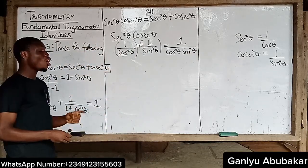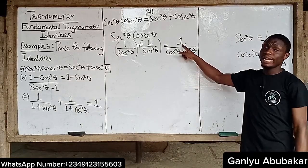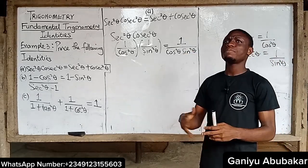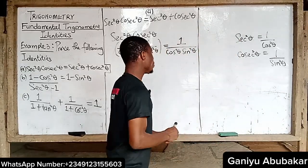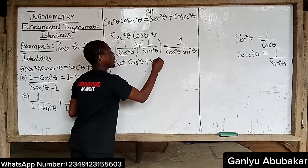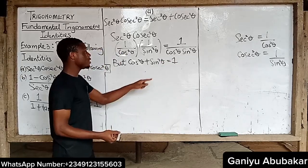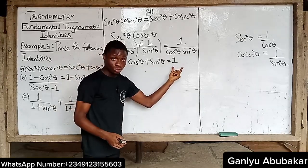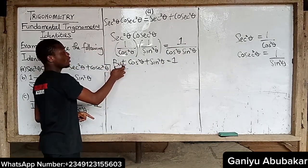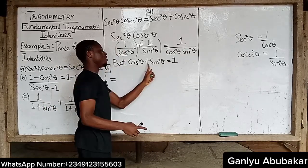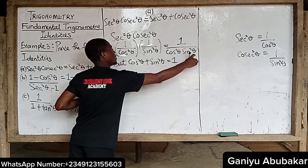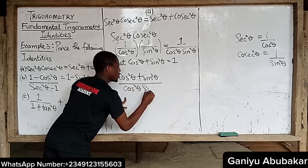At this point, observe that I have a 1 in the numerator and cos and sine in the denominator. I can express that 1 using the Pythagorean identity: cos squared theta plus sine squared theta equals 1. So I replace the 1 in the numerator with cos squared theta plus sine squared theta, giving us: cos squared theta plus sine squared theta, all over cos squared theta times sine squared theta.